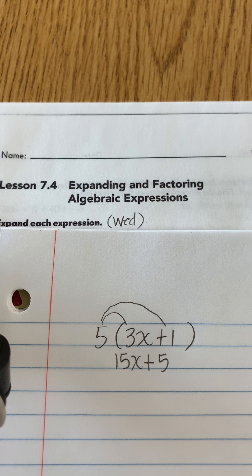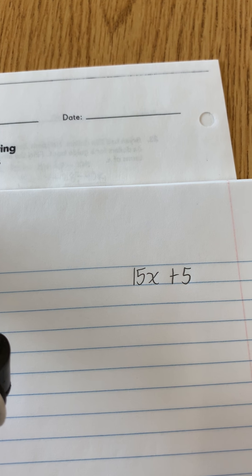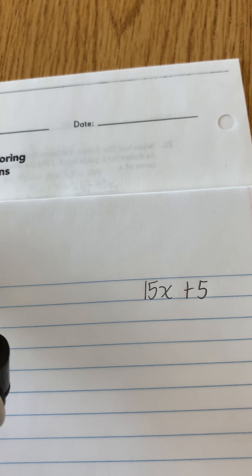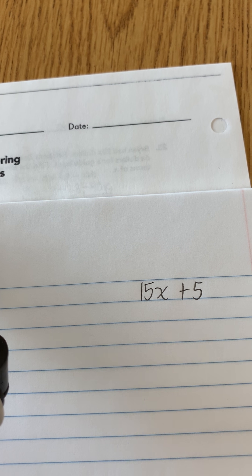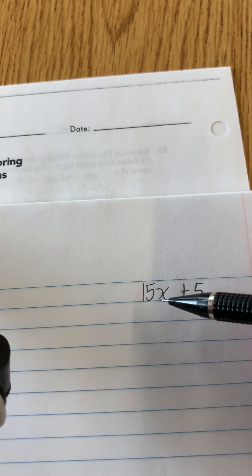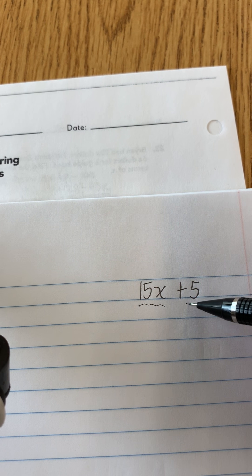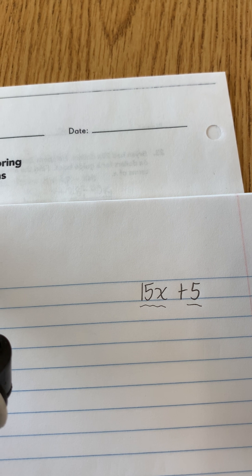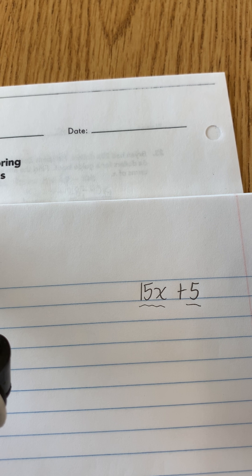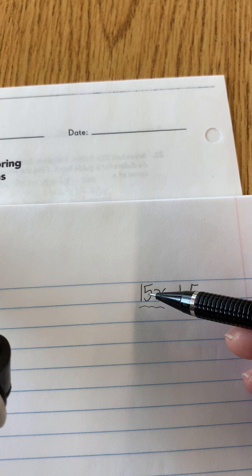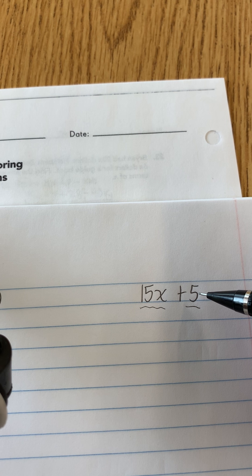Well factoring is starting with 15x plus 5 and going backwards, figuring out what you can factor out. So what you're looking at is you're looking at both your terms and you're saying, what is my greatest common factor for 15 and 5? Well 5 goes into 15 and 5 goes into 5.